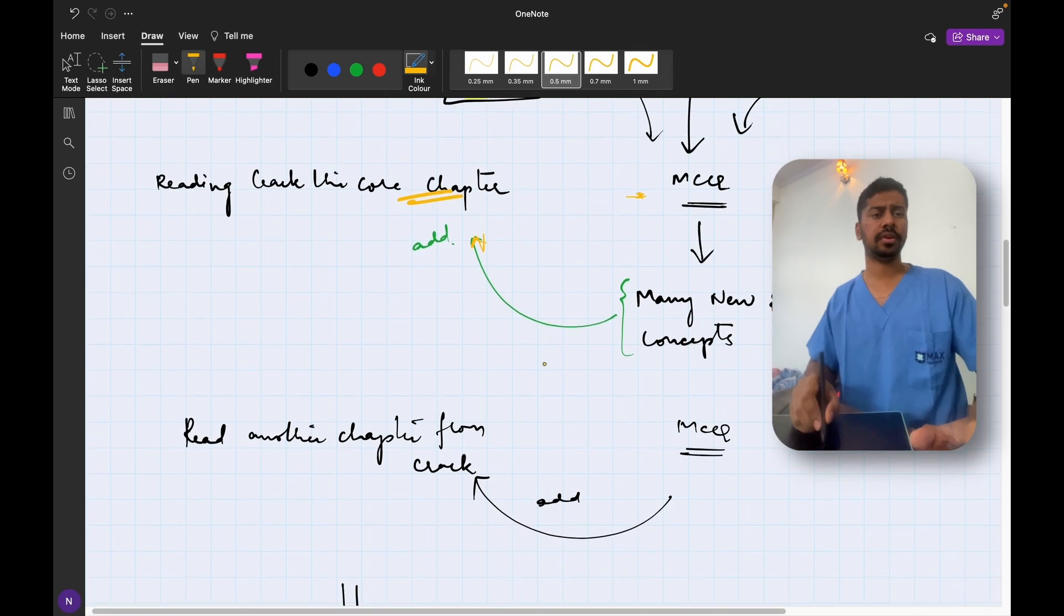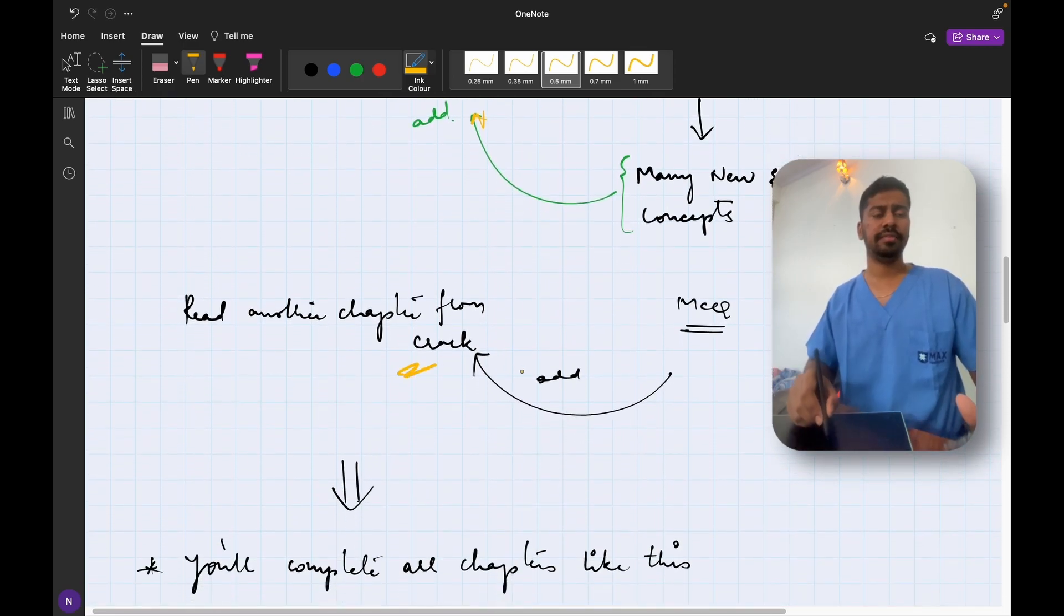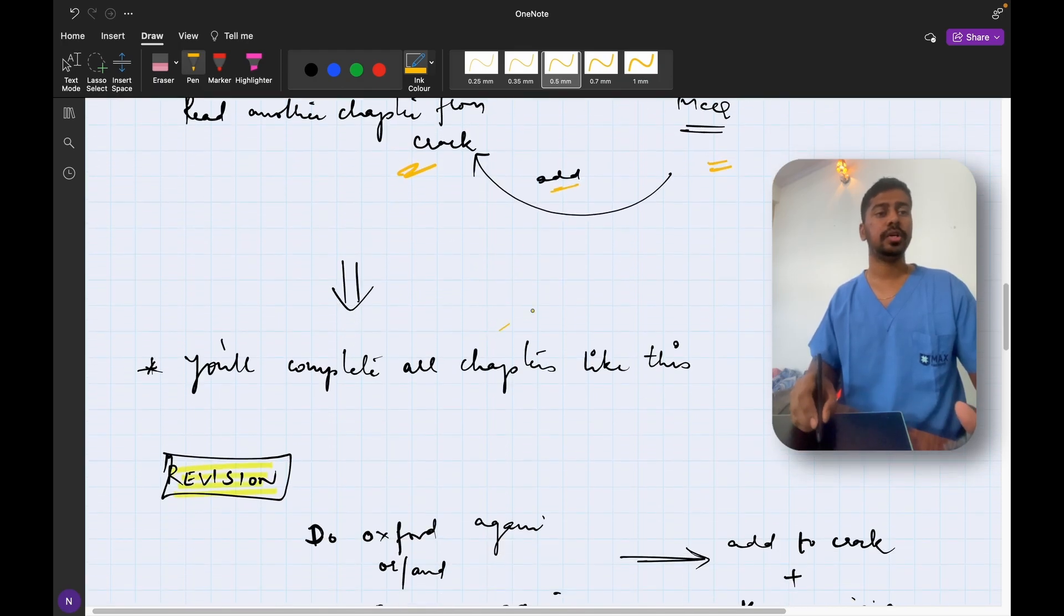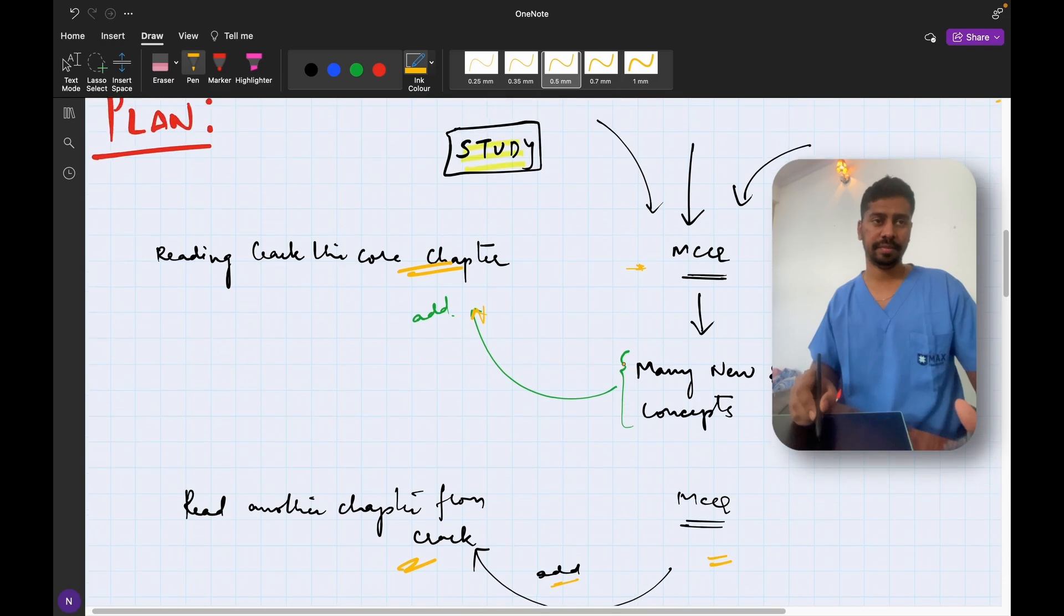So keep repeating this for all the chapters: read from Crack the Core, do MCQs from either online resource or offline resource or both, and then you add this information to your notes. Eventually you will complete all the chapters like this. So this completes your studying phase of the exam.